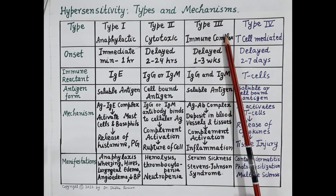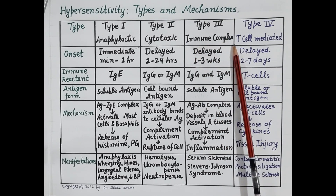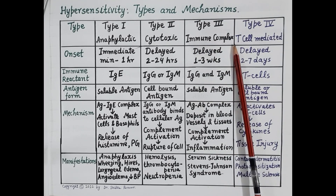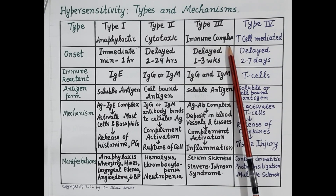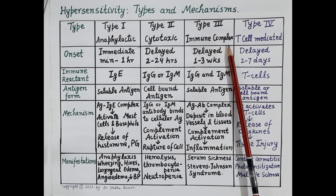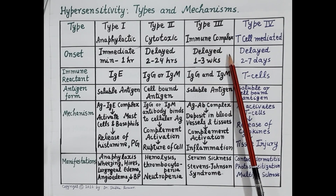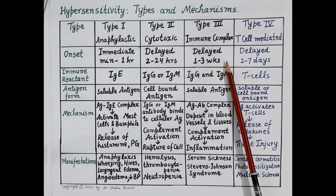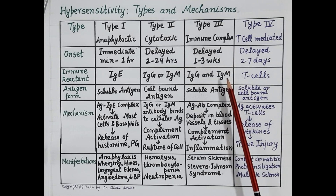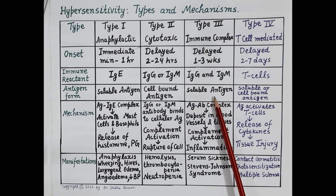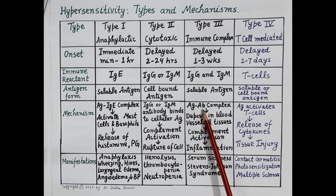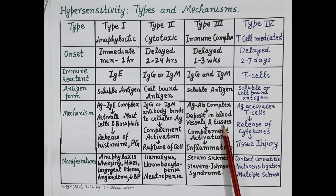Type 3 allergic reactions are also termed immune complex mediated reactions. An antigen-antibody complex is produced, and this complex causes inflammation and allergy. The antigen here is a drug. These are delayed onset reactions and symptoms usually occur within 1 to 3 weeks of exposure to the drug. Humoral immunity is activated, producing immunoglobulin G and immunoglobulin M antibodies. A complex is formed between the drug and the antibodies.